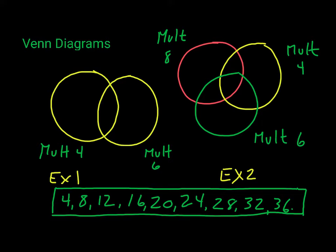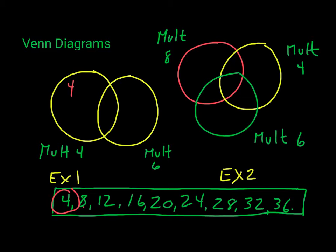The first number is 4. It's a multiple of four, but is it a multiple of six? No — so 4 goes on the left side. Next is 8. It's a multiple of four, but not a multiple of six, so we write 8 here as well. Notice I'm not writing them in the middle, because neither 4 nor 8 are also multiples of six.